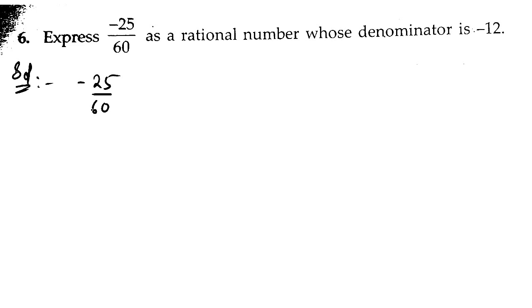To get 12, we need to divide this 60 by 12. So if we divide with minus 5, we will get minus 12 in the denominator. So let us divide,